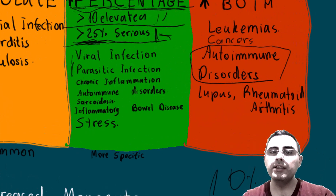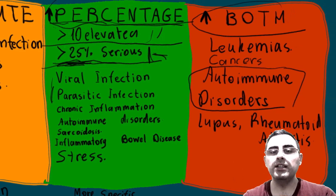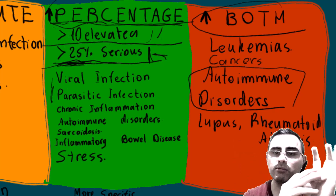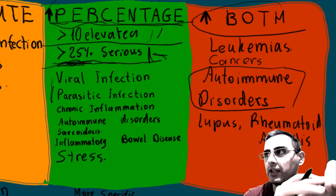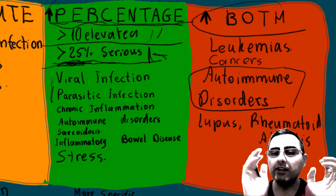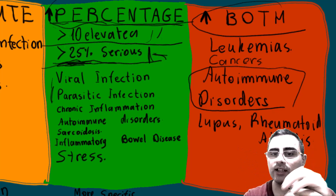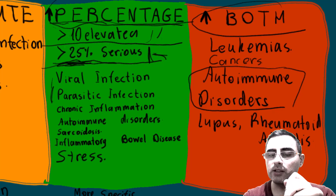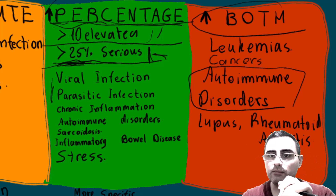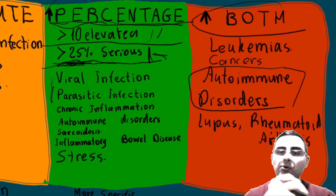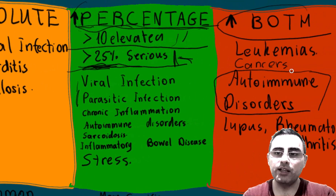When both are elevated, it always needs attention — it could be autoimmune disease or cancer. However, we cannot diagnose cancer based on monocytes alone. There should be other indicators as well, and if a biopsy is needed, it should be performed. Monocytes alone are not enough to diagnose cancer.